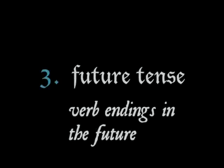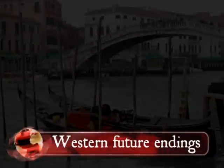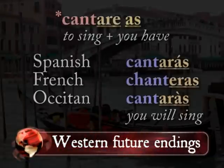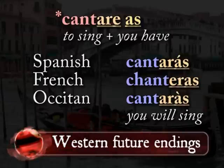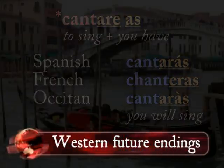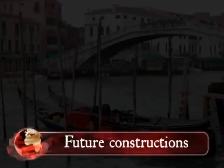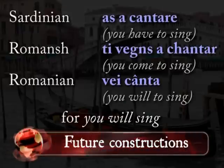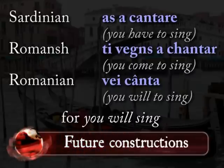There's one more tense: the future. Western Romance languages developed future endings by tacking the Vulgar Latin word for 'have' to the backs of infinitives, like cantare as. Sardinian Romance, Romanian, and Southern Italian languages didn't develop these future endings — they didn't share in this innovation, nor did they inherit the classical Latin future. Instead, they have phrases for the future, like asa cantare or ve canta.